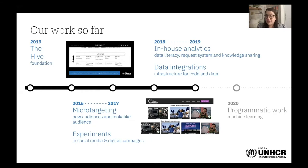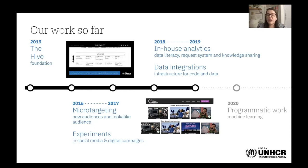Now I'll shift to 2020. You'll notice this year includes programmatic work — work that directly impacts the lives of refugees both in the U.S. and abroad. Sometimes we're using machine learning, but sometimes we're going back to the bottom of the pyramid to understand what data we need to collect in order to be able to reach the top.